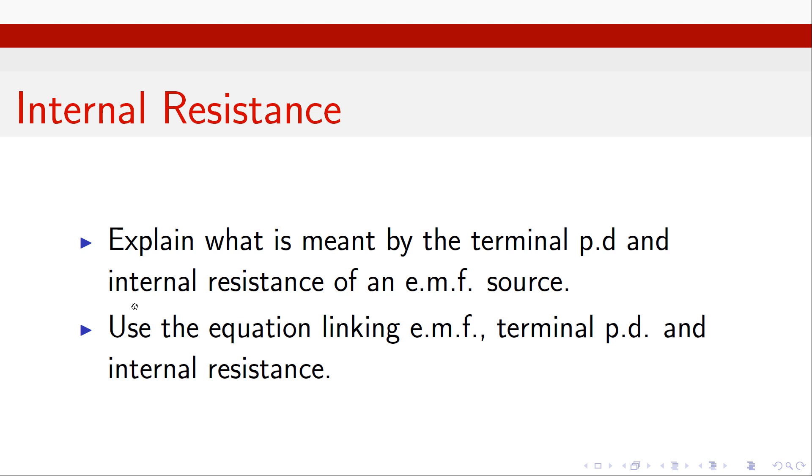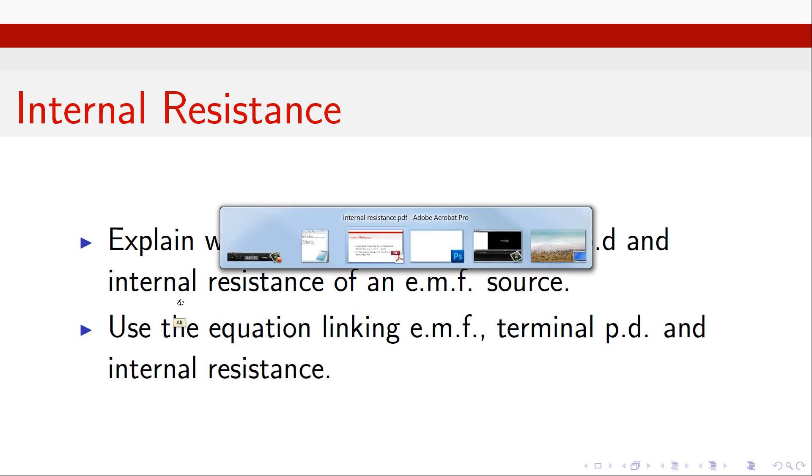If we've got some power supply — be it a cell, a generator, or something like that — then it is made out of stuff, and anything made out of stuff has some electrical resistance. Unless it's made entirely out of superconductors, which we don't tend to get in voltage sources, any battery is going to be made out of something and therefore have a resistance.